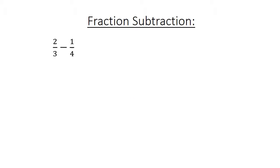Fraction subtraction. 2 over 3 minus 1 over 4. Find the lowest common multiple. 8 over 12 minus 3 over 12 equals 5 over 12.